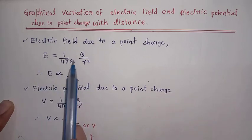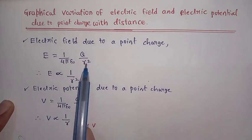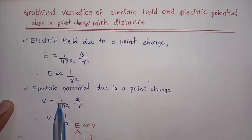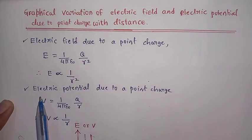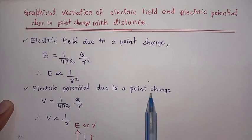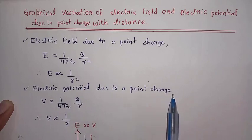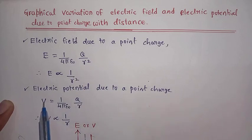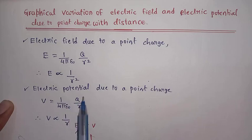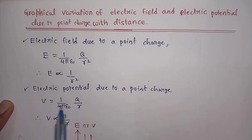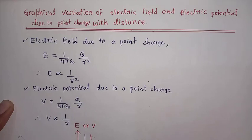Now if you consider the electric potential due to a point charge, it is given by the formula: V equals 1 divided by 4 pi epsilon naught, times q divided by r. By this equation, you can conclude that V is proportional to 1 by r, that is, inversely proportional to the distance.